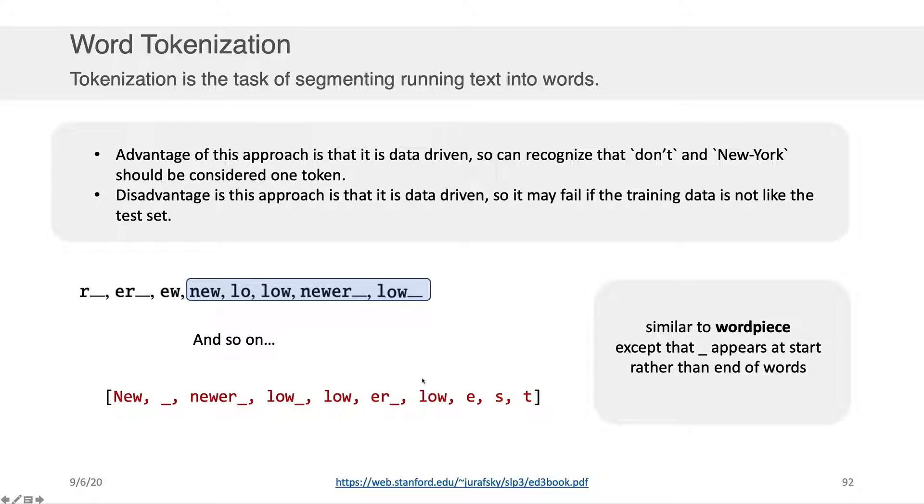I'm bringing this byte-pair encoding algorithm to your attention, and we're going into it in detail because some of the contemporary approaches for natural language processing leverage methods like byte-pair encoding. Word piece, for example, is leveraged by the BERT algorithm, except that instead of the hyphens, or the underscores, I'm sorry, appearing at the end of the sentence, they appear at the beginning of the sentence when they're doing the counts in the dictionary.